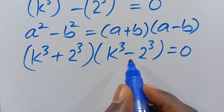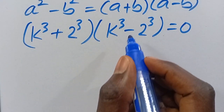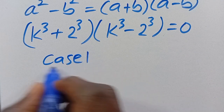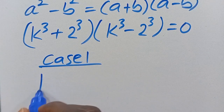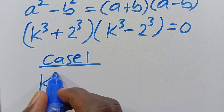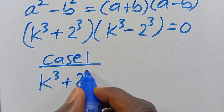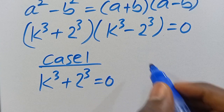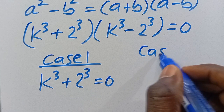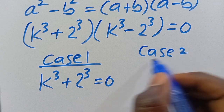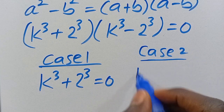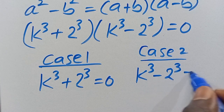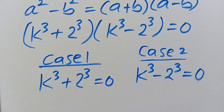Now for this expression to equal 0, it is either Case 1: k to the power of 3 plus 2 to the power of 3 equals 0, or Case 2: k to the power of 3 minus 2 to the power of 3 equals 0.